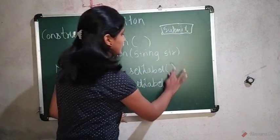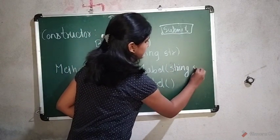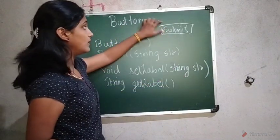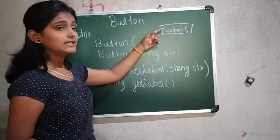Now here setLabel, so here it will have one parameter string. So here I will pass the string whichever I wanted. This is on button. So it will set on this button.